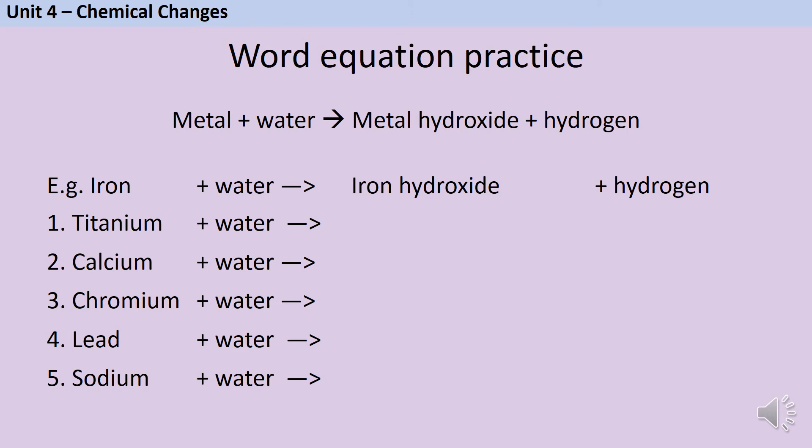You need to be able to write word and symbol equations for all of the chemical reactions named in the specification. So let's look now at how we would do these word equations. Like when metal reacted with oxygen, we have a general equation for metals reacting with water. Metal plus water reacts to form metal hydroxide plus hydrogen. Remember, you always need to have an arrow in the centre of your word equation, never an equal sign.